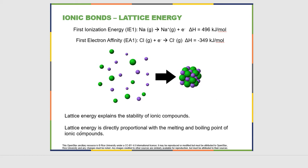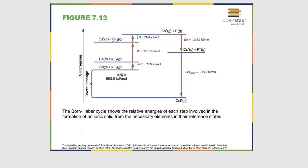The lattice energy explains the stability of ionic compounds. Lattice energy is directly proportional to the melting point and the boiling point of an ionic compound. So if you're asked about relative melting point or boiling point, you're really being asked about relative lattice energy. Lattice energy is difficult to calculate, which leads us to the Born-Haber cycle. I'm not going to ask you to actually calculate this in this course, but it's a way of implementing Hess's law.